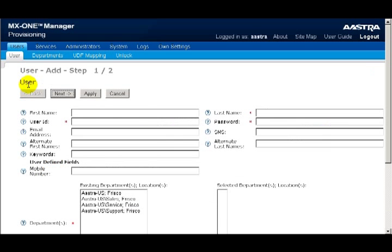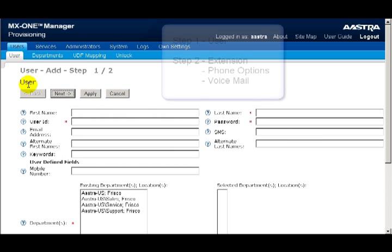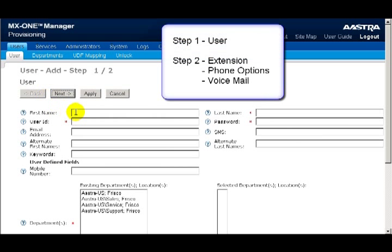Adding a user is a two-step process. The first step is where we'll enter information about the user. The second step is where we'll enter information about the extension, the phone options, and the voicemail box.